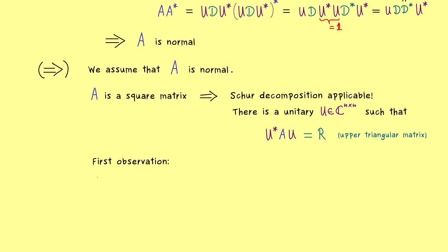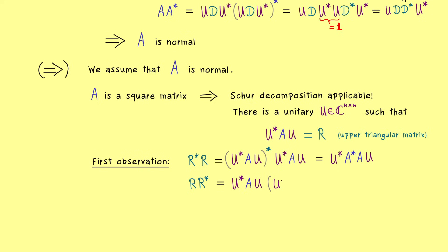The first observation is that if A is normal, then this upper triangular matrix R also has to be a normal matrix. To see that we calculate R* R and R R*. Using the star operation and the fact that U is unitary, R* R simplifies to A* A, and R R* simplifies to A A*. Since A is normal, A* A = A A*, so we get R* R = R R*, meaning R is also a normal matrix. Our whole discussion is now reduced to normal triangular matrices: how do normal triangular matrices look?